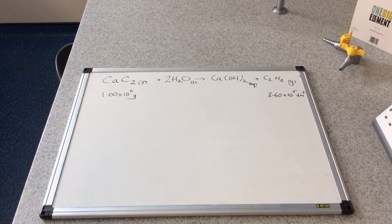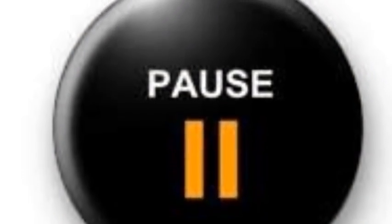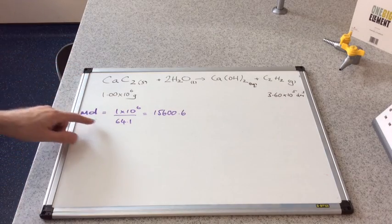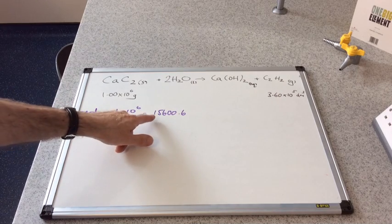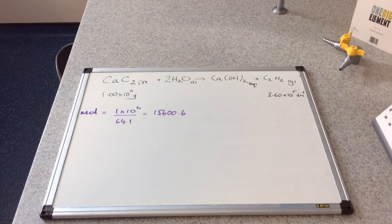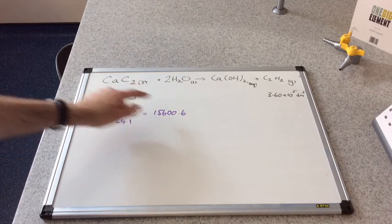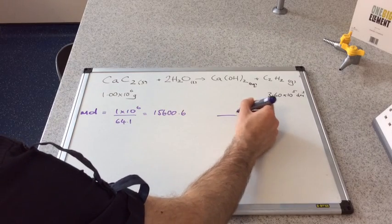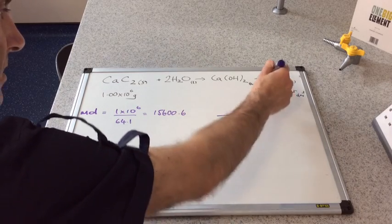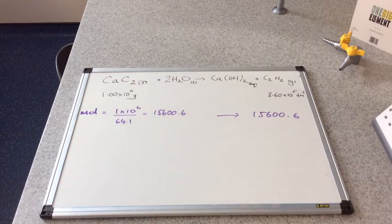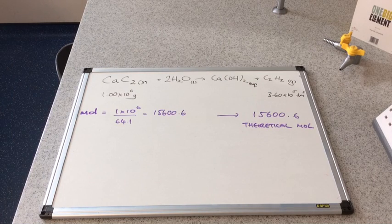The first thing I've done is I've worked out how many moles of calcium carbide we've got. Mass divided by MR, and that comes out at 15,600.6 as the actual calculator value. This many moles, this is a 1 to 1 mole ratio, so that means we will produce the same number of moles of this gas here. So 15,600.6 moles possible, and that's obviously our theoretical moles.